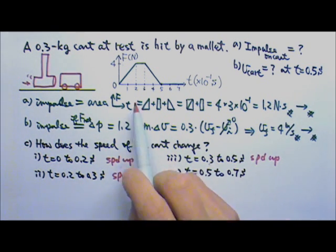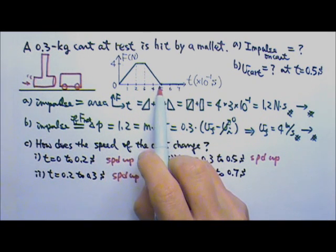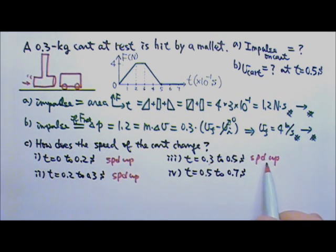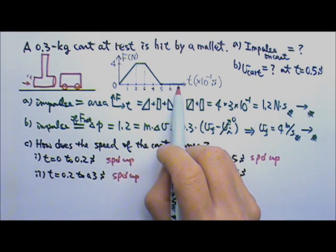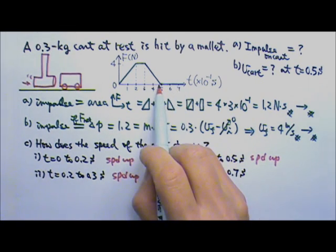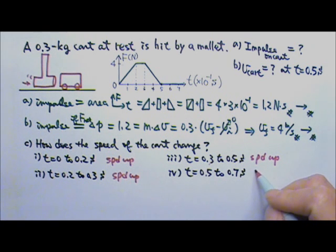And then for this segment, the force decreases. That means the cart is still speeding up, but it speeds up at a decreasing rate. And then for 0.5 seconds to 0.7 seconds, there is no force. No acceleration. So the cart travels at a constant speed.